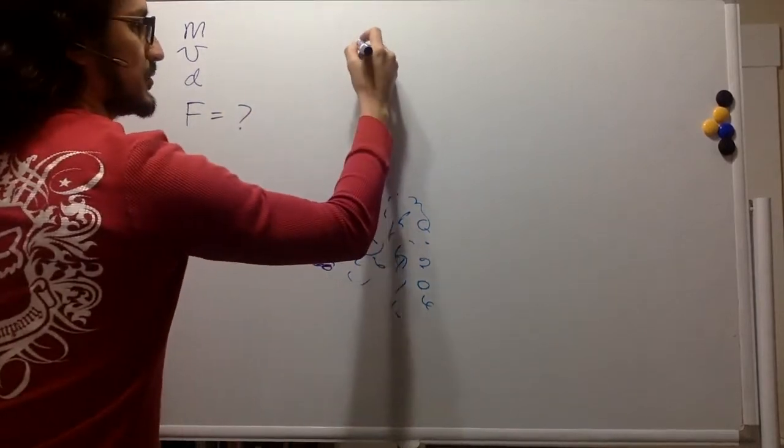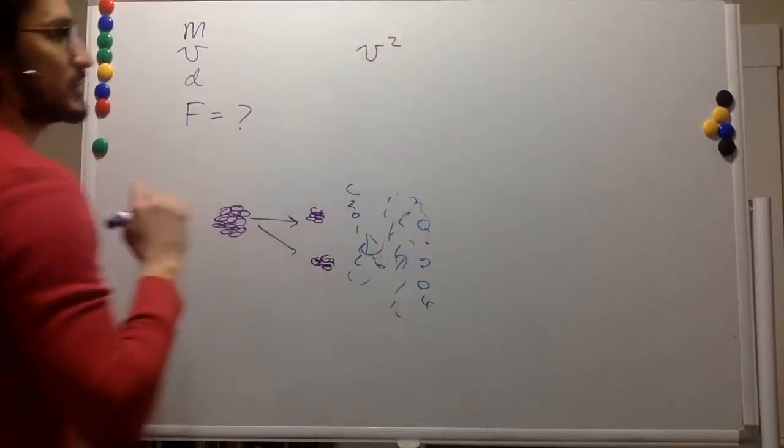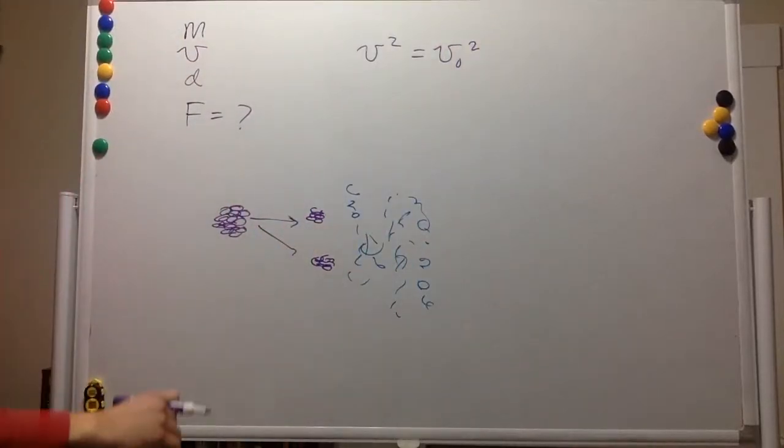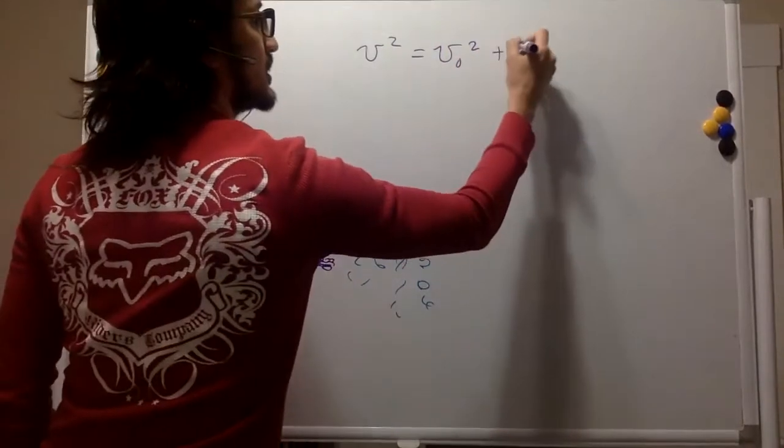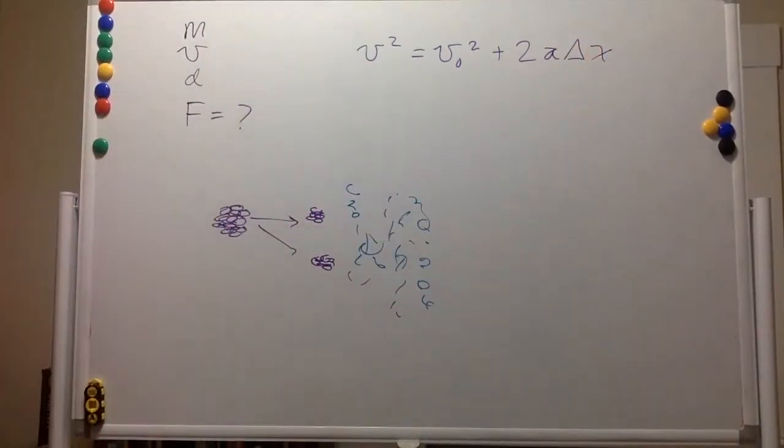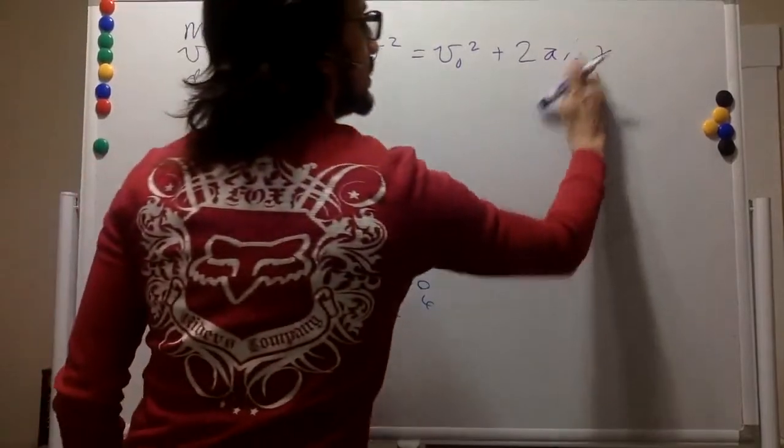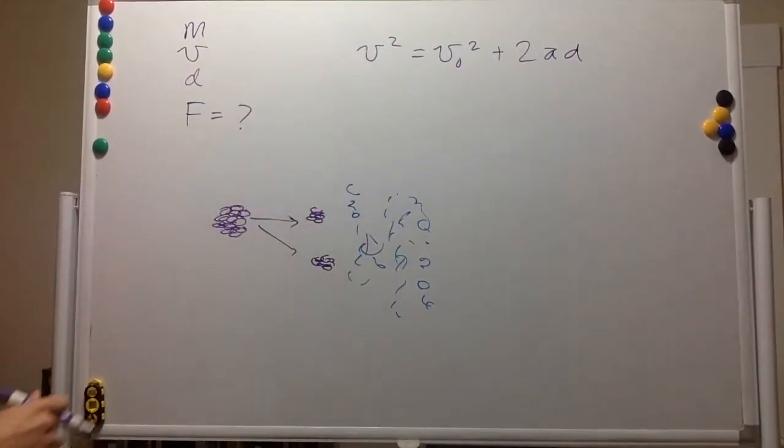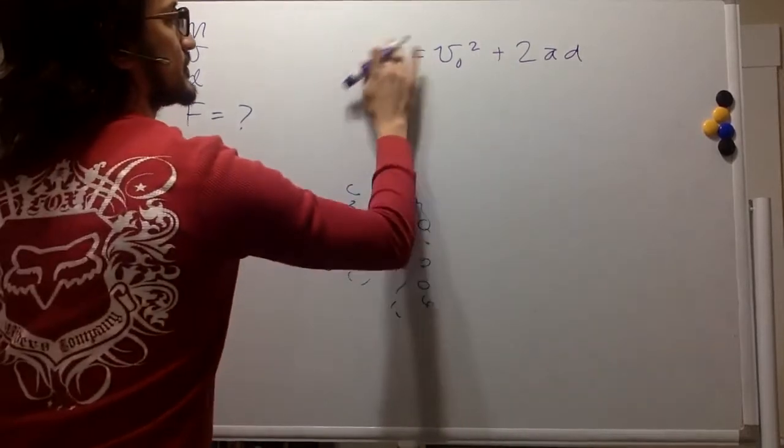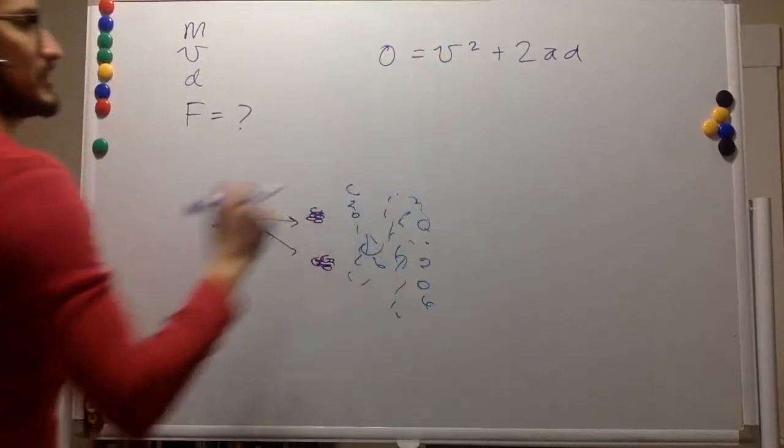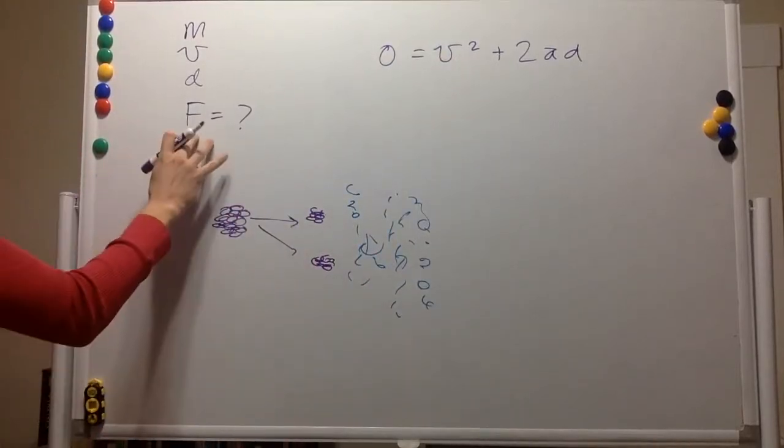We know from the kinematic equation that the final velocity squared is equal to the initial velocity squared plus twice the acceleration times the displacement. So here, the displacement we're going to call it d. The final velocity is zero because it stopped. The initial velocity we're just calling it v. And we want to know the force.